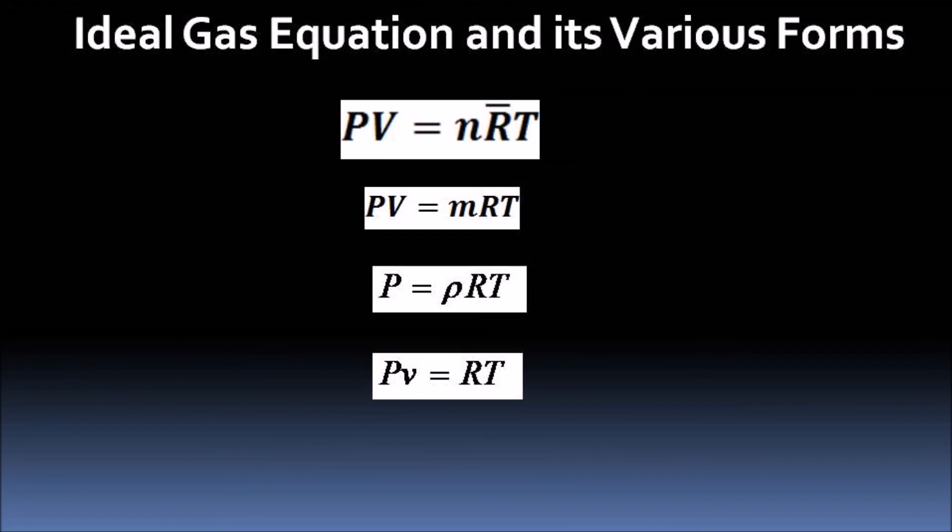To summarize the ideal gas equation in its various forms: PV = nRT, where V shows the absolute volume in meter cubed.